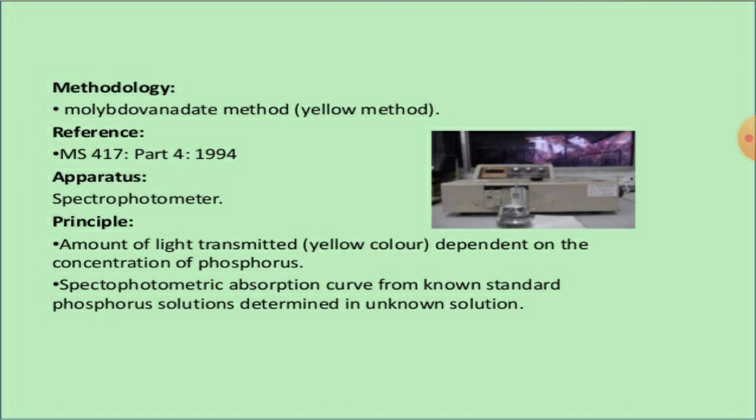The molybdovanidate method — also called the yellow method — is used for phosphorus determination, using a spectrophotometer. The principle is that the amount of yellow-colored light transmitted depends on the concentration of phosphorus, determined from the spectrophotometric absorption curve of unknown and standard phosphorus solutions.